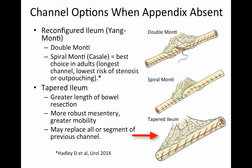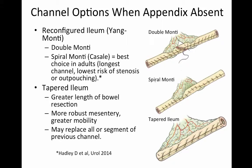Advantages and disadvantages to each of these procedures must be understood. The spiral Monti yields the most tenuous blood supply. The double Monti is hampered by difficulty with catheterization at the anastomosis between the two Monti ends. The tapered ileum can be hampered by its very large mesentery, which can get in the way of either tunneling this channel into the bladder or bringing it up to the skin. In longer channels, the mesentery can result in bowing or arcing of the channel, making it difficult to catheterize.